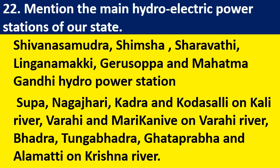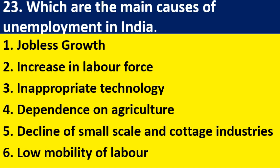Mention the hydroelectric power stations of our state. There are many; if you mention any four it's enough. They include: Shivanasamudra, Shimsha, Sharavati, Linganamakki, Gerusoppa, Jog, Kali Project, Nagjhari on the Kali river, Varahi on the Varahi river, and Marikamba. These are the hydroelectric power stations of Karnataka.